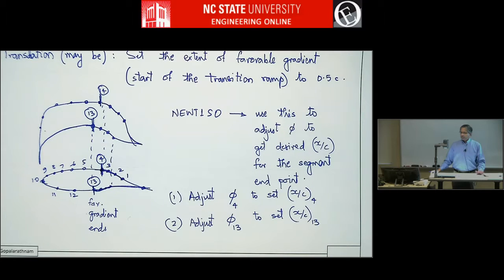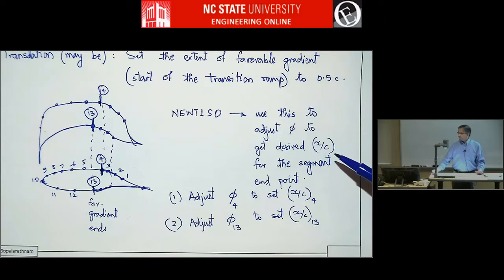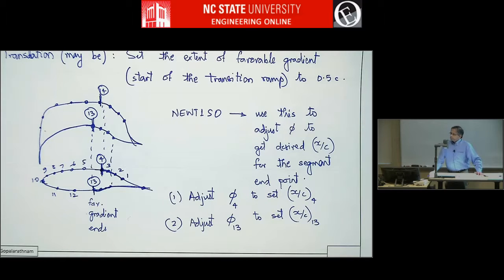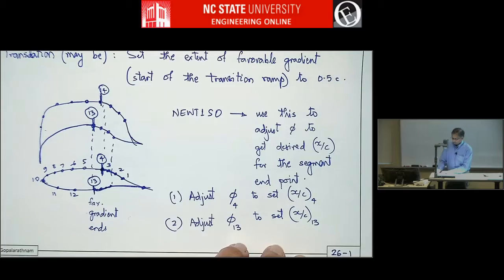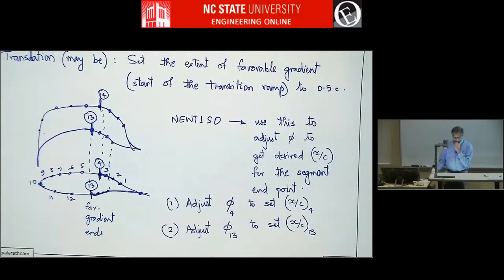Does that make sense? Is anybody having trouble? Has anybody succeeded in getting the newt1s0 working? I know Ed, you got it working yesterday, right? One of my questions is about the phi for the leading edge — I think this is not symmetrical. You said it. I'm just using what you have for the input file. Is there any reason we should change that at all? Do you remember what it is?